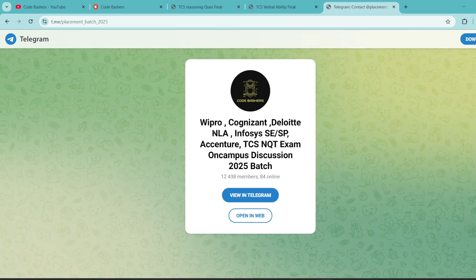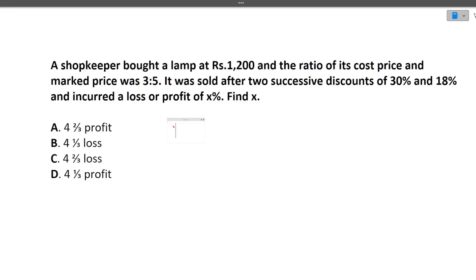Now let's start this video. Make sure to watch this video till the end. The first question is: a shopkeeper bought a lamp at Rs. 1200 and the ratio of its cost price and the market price was 3 to 5. It was sold after two successive discounts of 30% and 18%, and it incurred a loss or profit of X%. Find X.